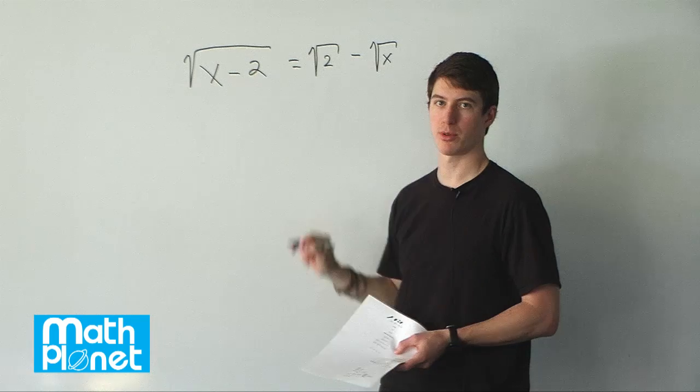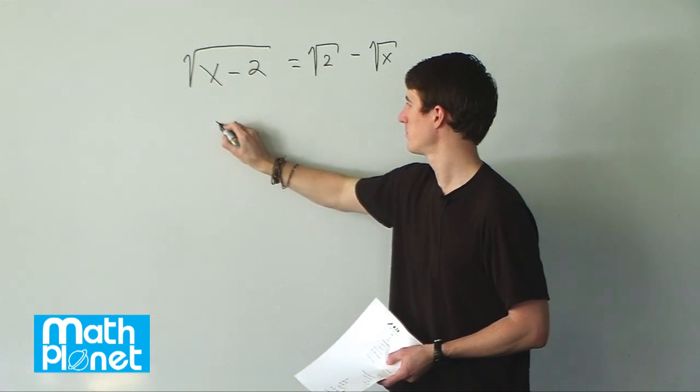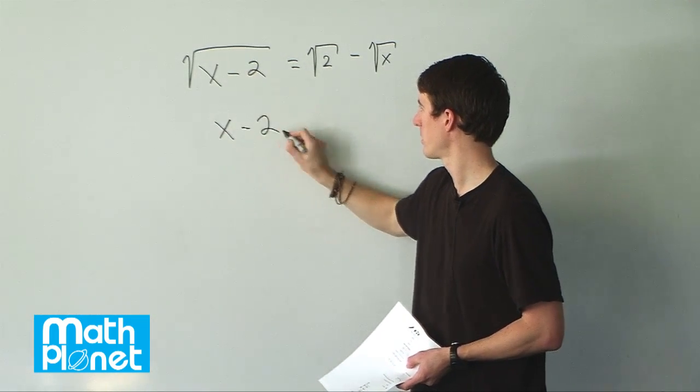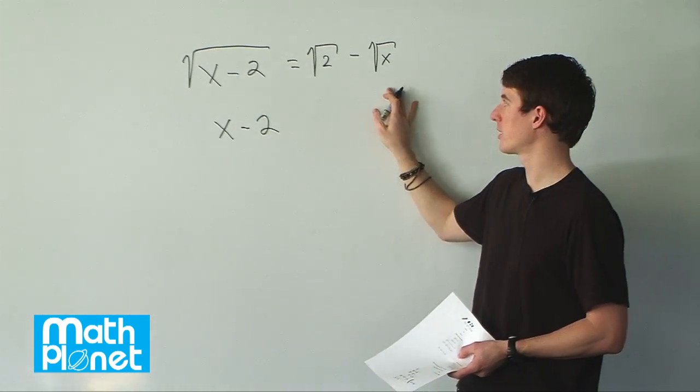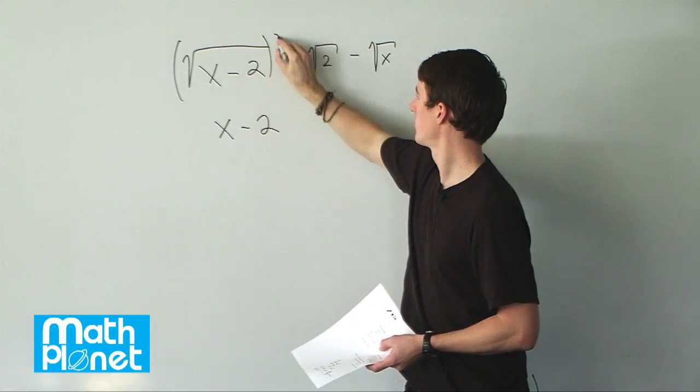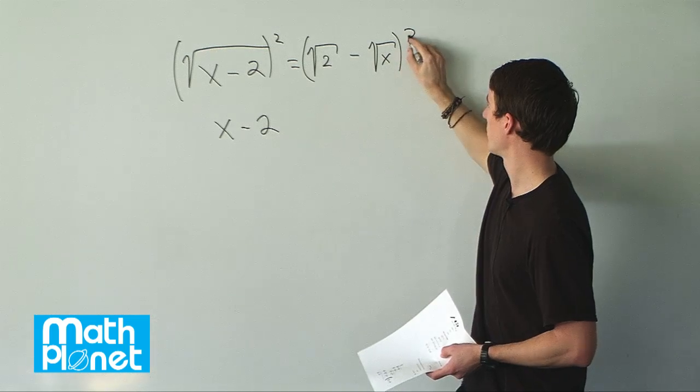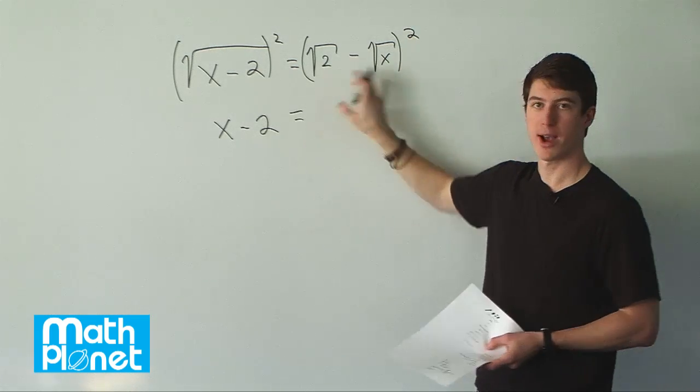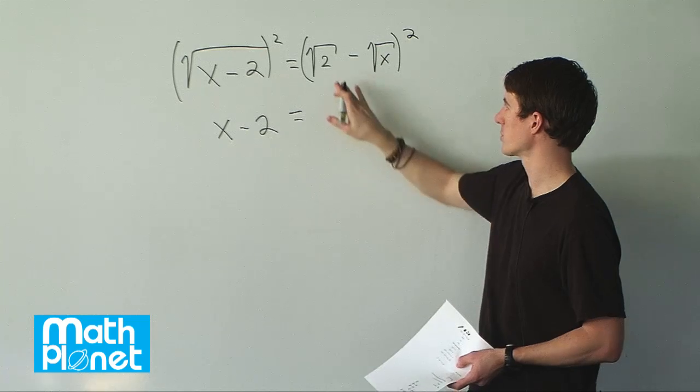If we square a simple square root, we just get what's left on the inside: x minus 2. If we square the right hand side, it's going to be a little different. We need to multiply out in the normal way of the order of operations.